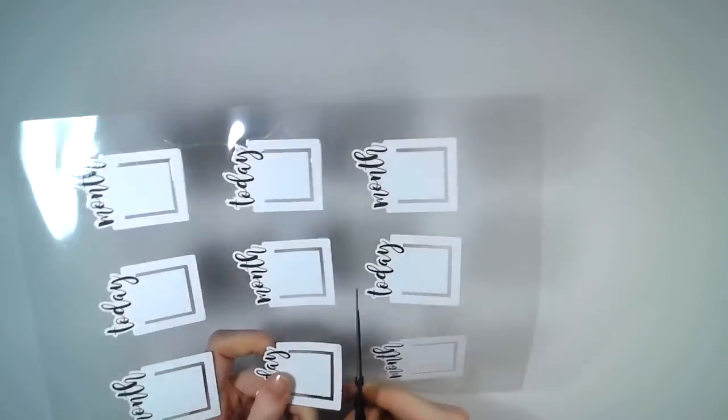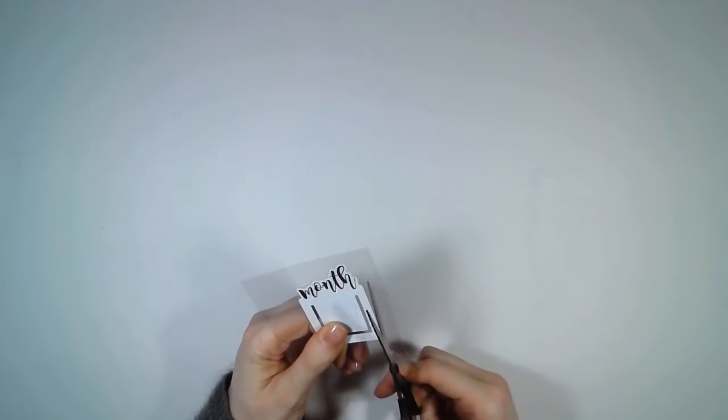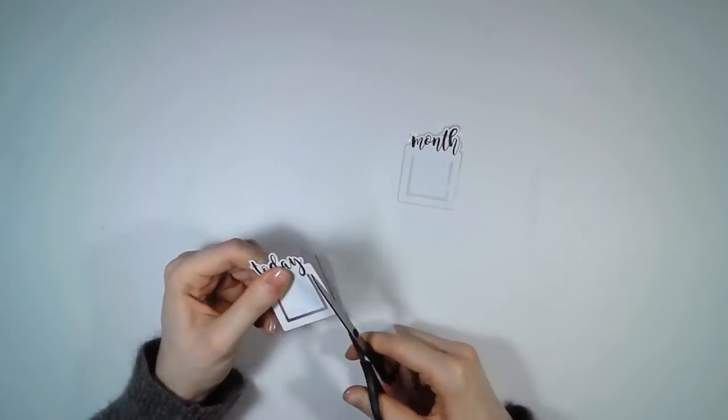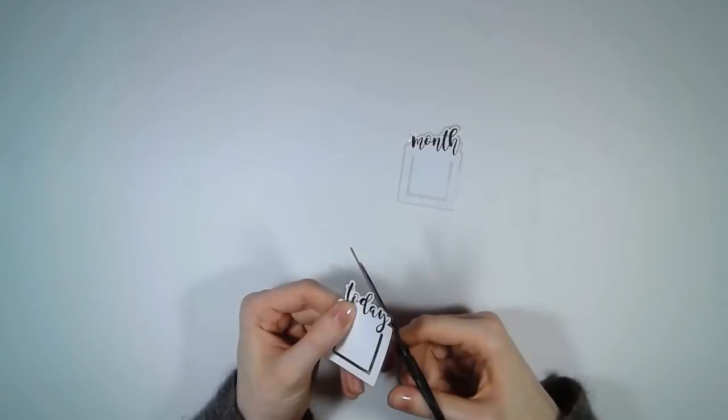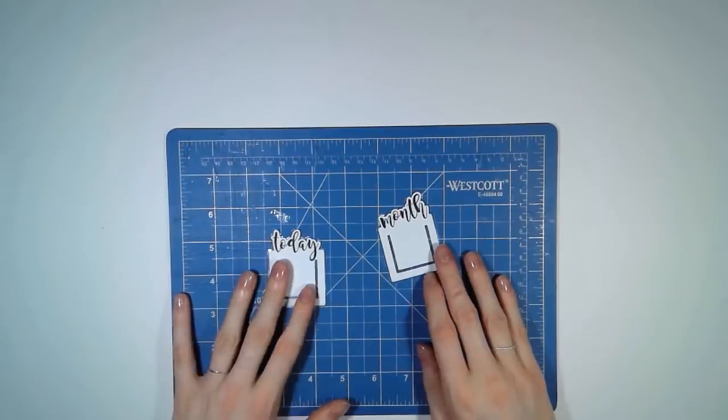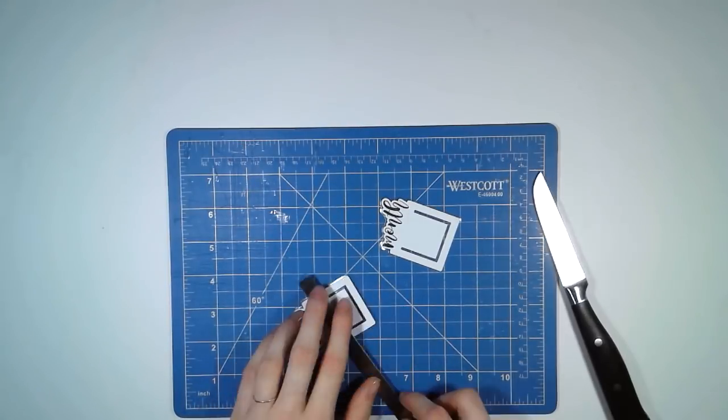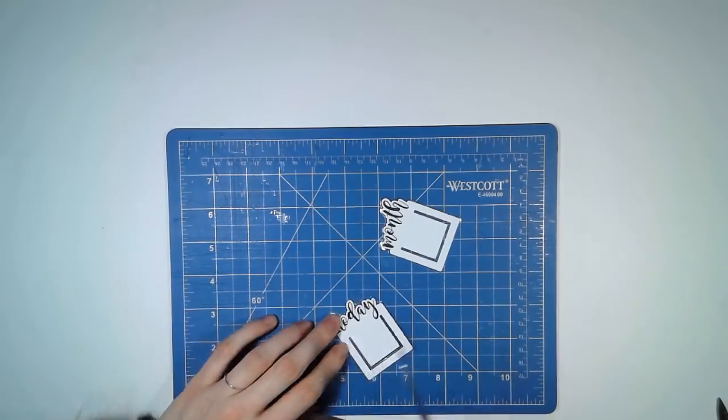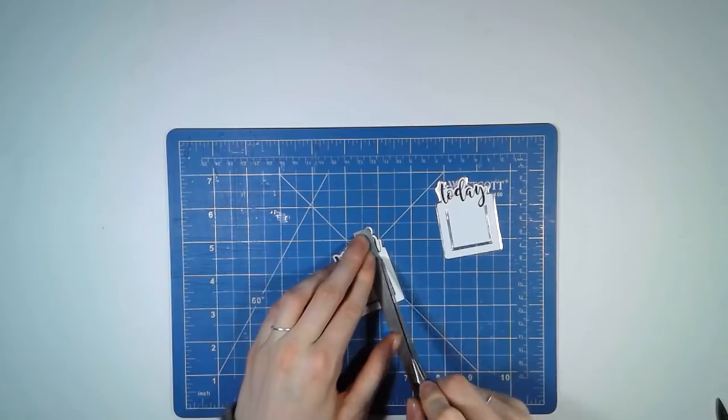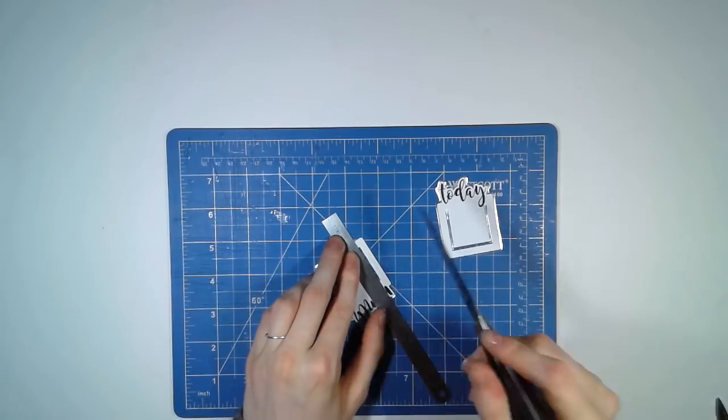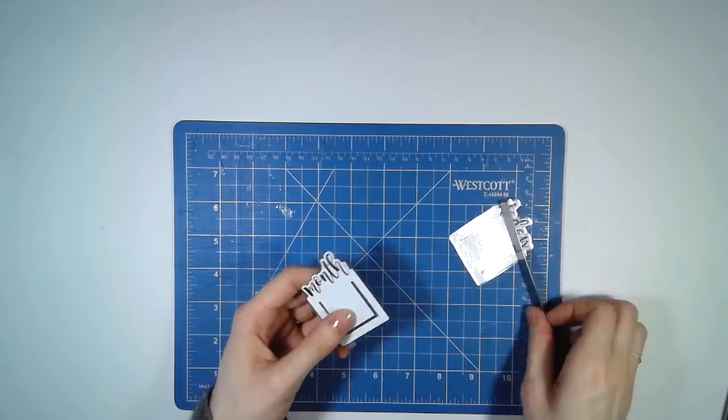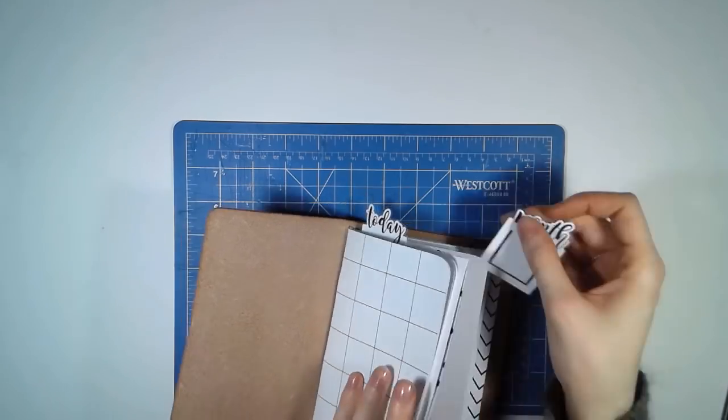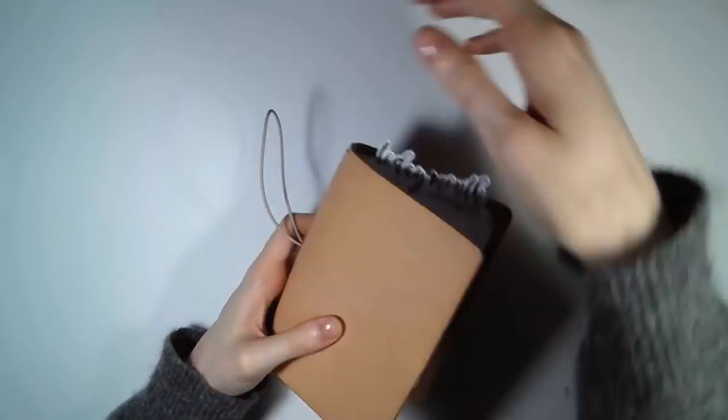After it comes out of the laminator we just need to cut it out. The last step is to make some slits into the tabs so we can slide it on top of the page. I'm using a kitchen knife to do this, but I would recommend to use an exacto knife. Now you can put them on top of the notebook to mark the day or the month.